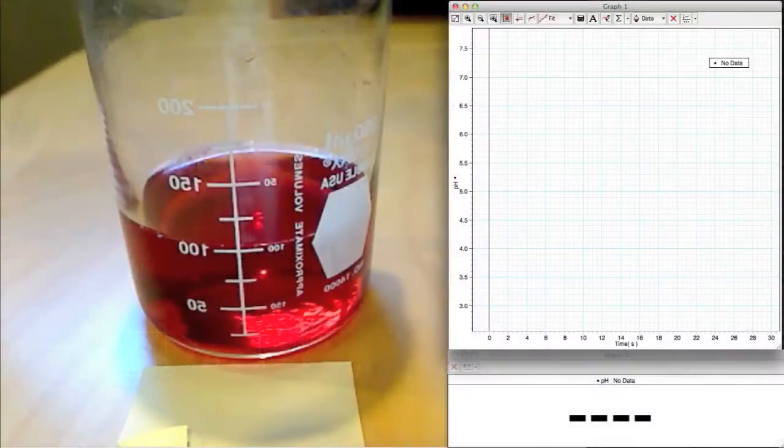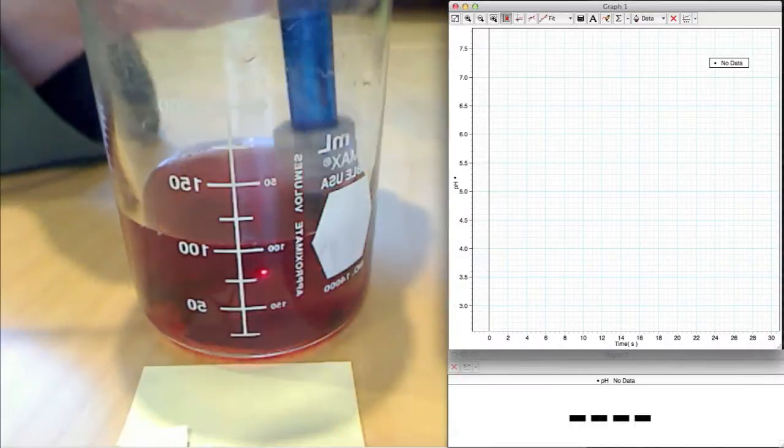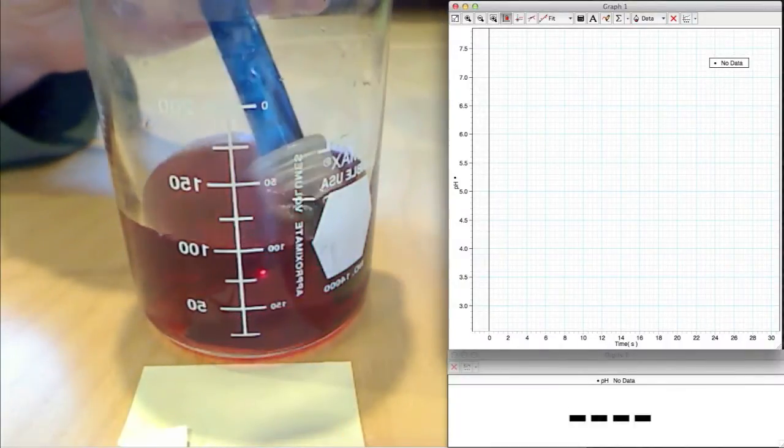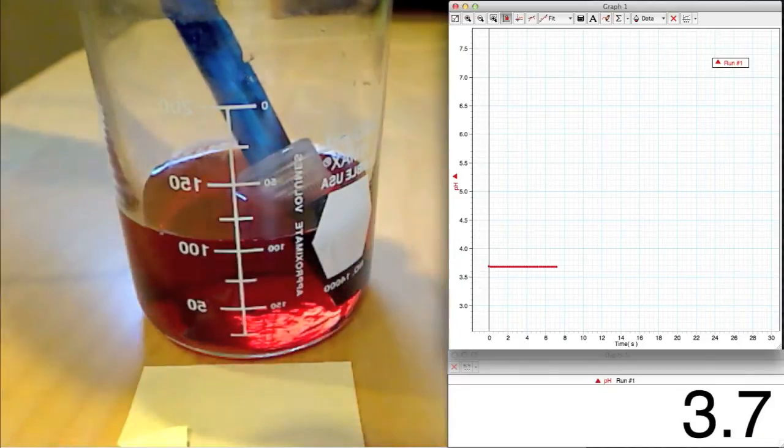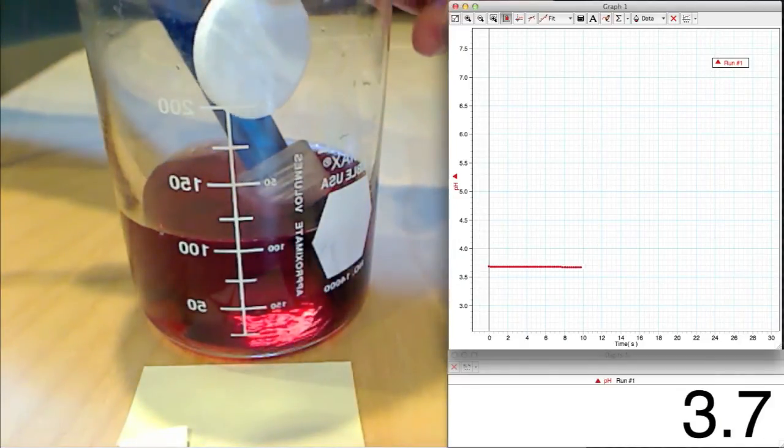So let us try this now by adding a solid tablet of Alka-Seltzer to a specific amount of cranberry juice. We will use a pH probe to do two things: track the pH and let us know how long it takes for the reaction to complete.